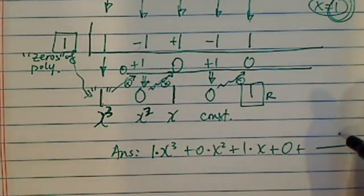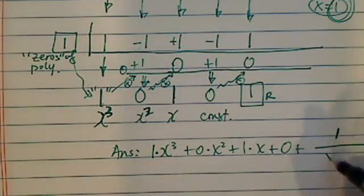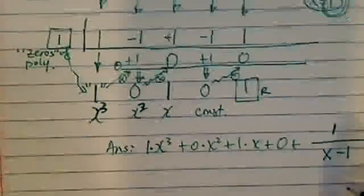And then with the remainder, this is what we do. We'll put the remainder on top, divided by x minus 1. That's what we're dividing. Okay, so our final answer, let's clean it up.